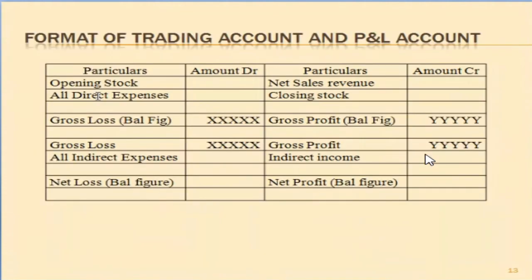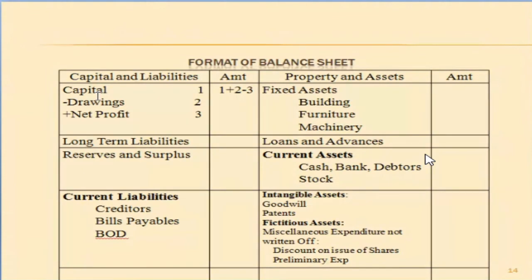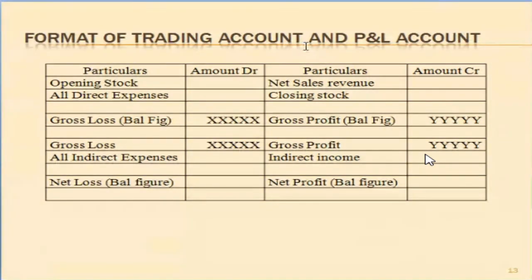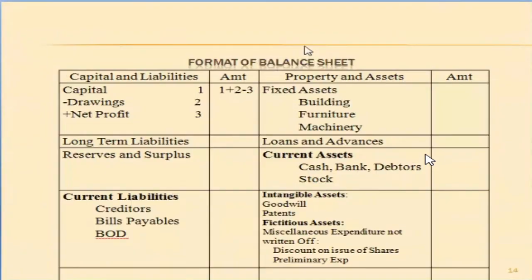Expenses and revenues are entered in the profit and loss account; assets, capital, and liabilities are entered in the balance sheet. When you do so, both sides of the balance sheet must be equal — because revenue minus expenses affects capital, and once adjusted, assets equal capital plus liabilities. If both sides are equal, there is no mathematical error up to this stage.